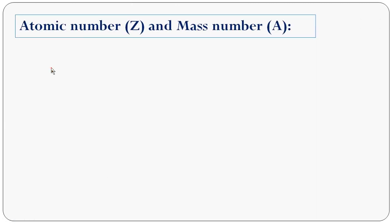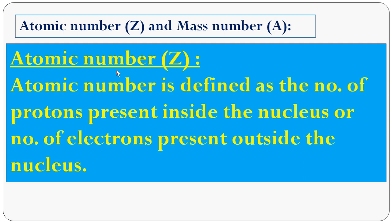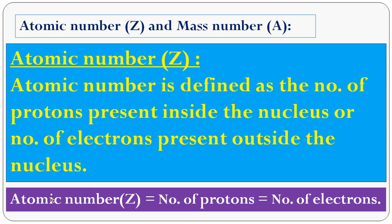The next topic: atomic number, denoted by the symbol Z, and mass number A. Atomic number is defined as the number of protons present inside the nucleus or the number of electrons present outside the nucleus. So, atomic number Z equals number of protons equals number of electrons. For example, if the atomic number is 13, the number of protons is 13 and the number of electrons is also 13. These three values — atomic number, number of protons, number of electrons — are the same.